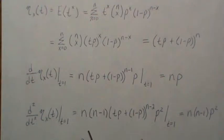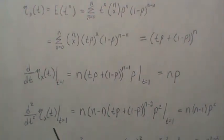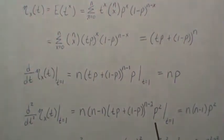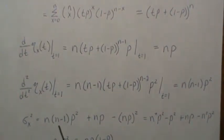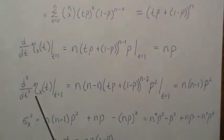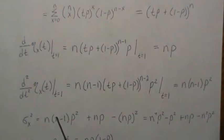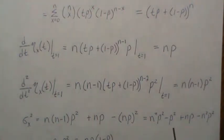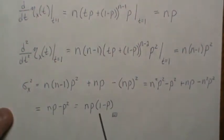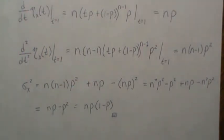If we take the first derivative of eta evaluated at t equals 1, we bring n out front, it's raised to n minus 1, times the derivative of the inside. Evaluated at t equals 1, the p and minus p cancel, giving 1 raised to n minus 1, which is 1, so we get n times p — the first moment of a binomial. To calculate the variance, we take the second derivative, evaluate at t equals 1, and get n times n minus 1 times p squared. Plugging into the variance formula gives npq, the known variance of a binomial.